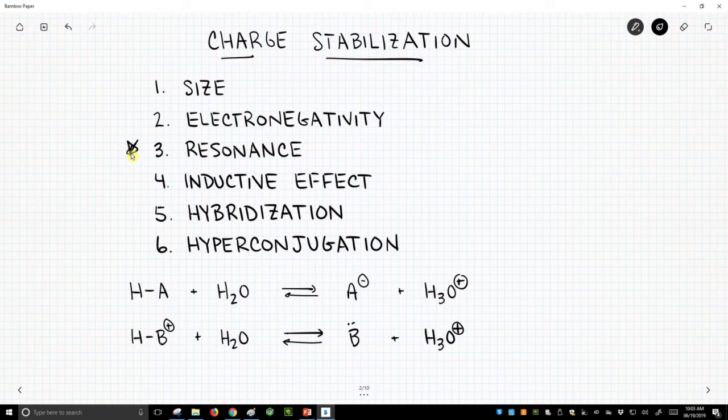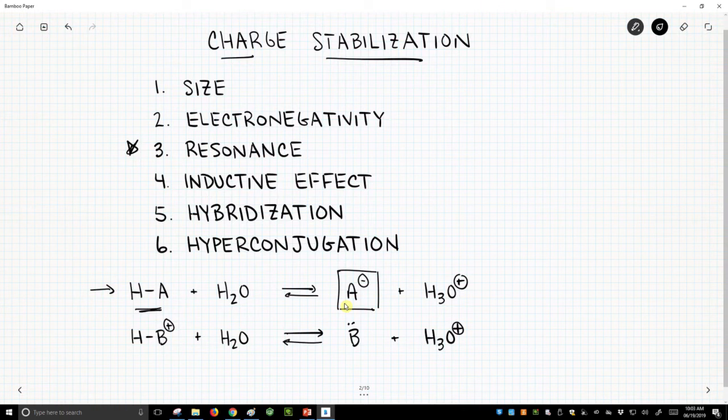We will see almost exclusively this top reaction where we have an acid, and the acid is deprotonated to form an anionic conjugate base. And so we'll talk about how these six factors influence that negative charge.